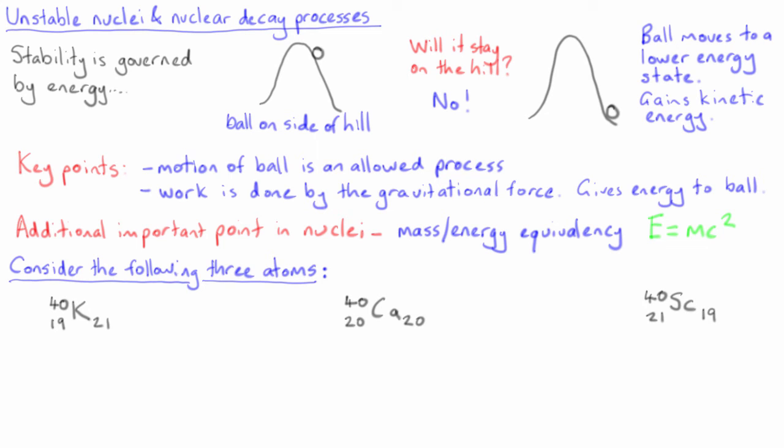Each of these atoms have a mass that can be measured, and the measured masses in kilograms are shown. While they are very similar, calcium-40 is very slightly lower in mass than both of its neighbouring mass-40 atoms.